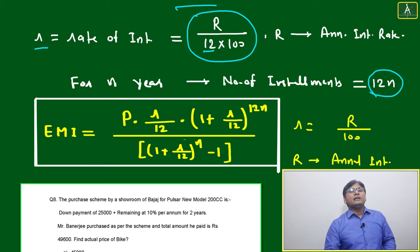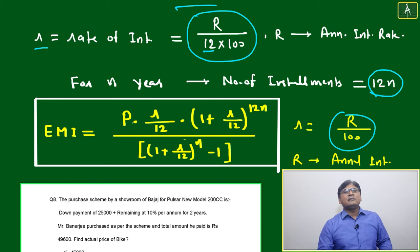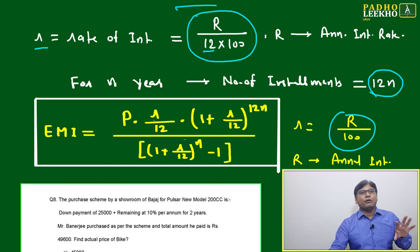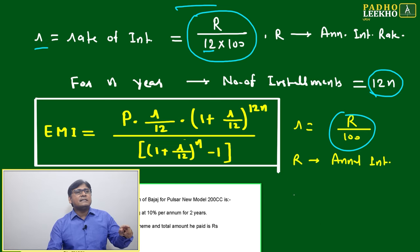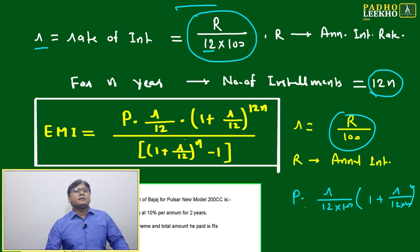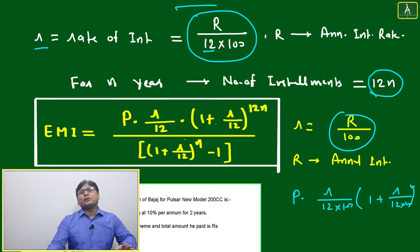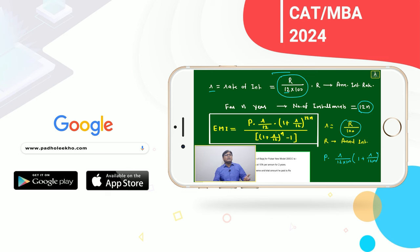The EMI formula is: EMI = P · (r/12·100) · (1 + r/12·100)^(12n) / [(1 + r/12·100)^(12n) - 1]. If r is taken directly as a fraction, write it as P · (r/12) · (1 + r/12)^(12n) / [(1 + r/12)^(12n) - 1]. Both representations are equivalent — one uses percentage form, the other decimal. In EMI you must divide r by 12.